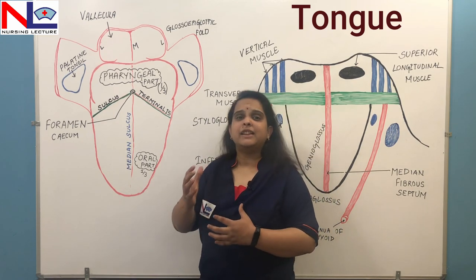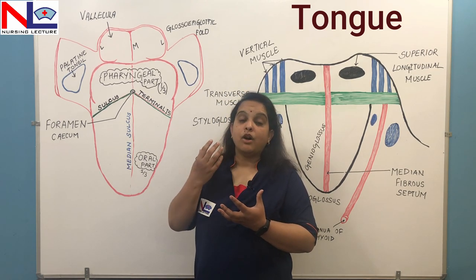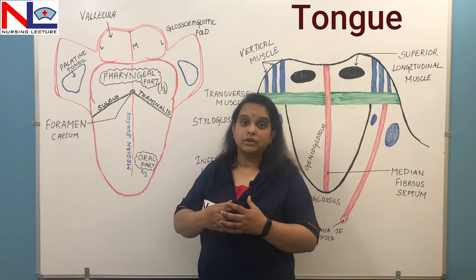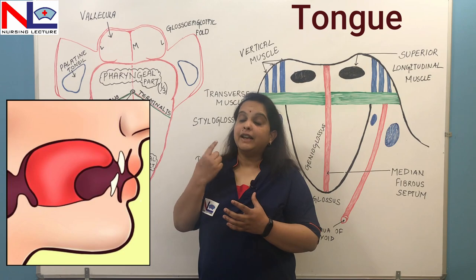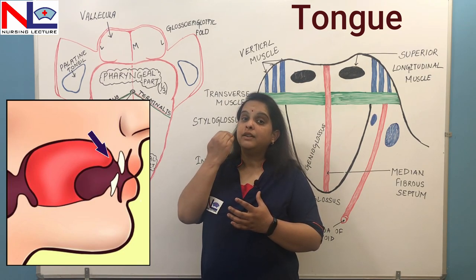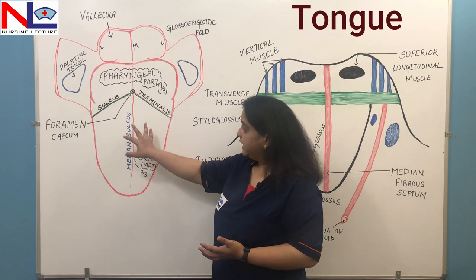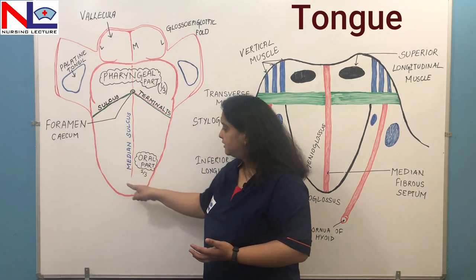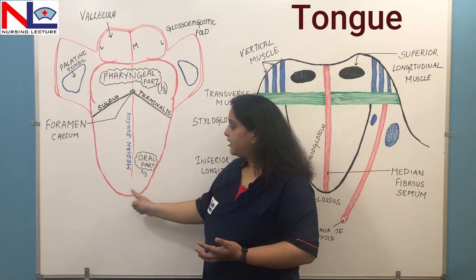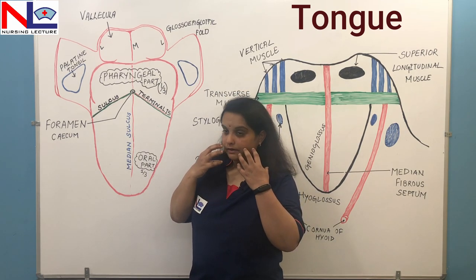The tongue essentially forms the floor of our mouth. When our mouth is closed, the anterior tip of the tongue rests just behind the upper incisor teeth. Here you can see this is the body part, and the lateral aspect of this body part comes in contact with the gums and teeth.